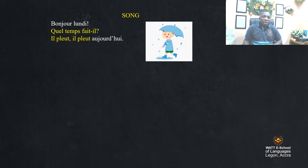And you answer by mentioning the weather. Il pleut. Il pleut aujourd'hui. Look at the image — you can see someone with an umbrella. It means that it is raining. Quel temps fait-il? What is the weather like? It is raining. It is raining today. Il pleut.